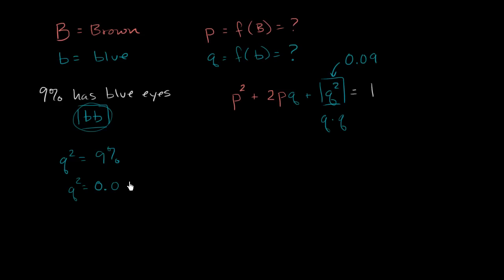So then we can solve for Q. If Q squared equals 0.09, that means that Q is going to be the square root of 0.09, which is equal to 0.3. So just like that, we were able to figure out the allele frequency of the recessive allele. 30% - if you were to look at the genes in the population, 30% express or code for the recessive allele, are the recessive variant.